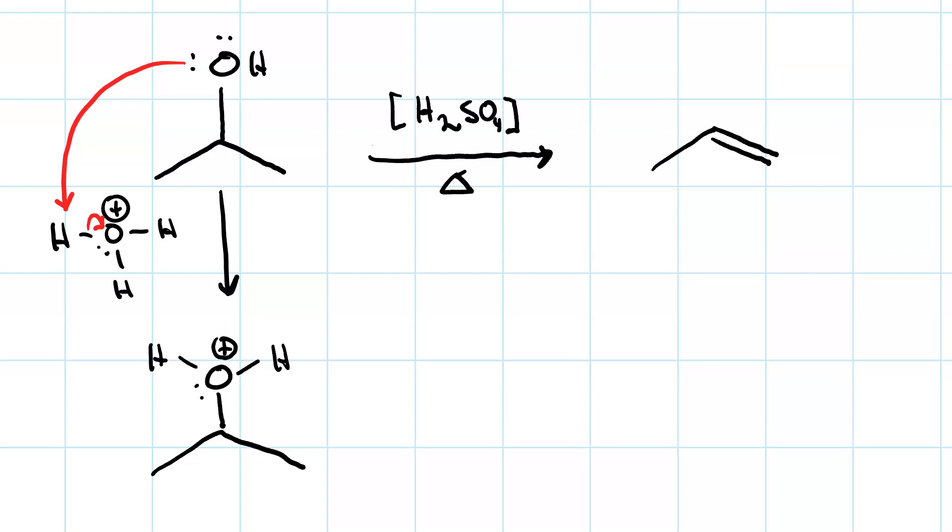We now have a good leaving group in this water. So loss of a leaving group can be our second step. This produces a carbocation and a water molecule. I should also say that we produced a water molecule in the first step. That's the conjugate base of the hydronium.